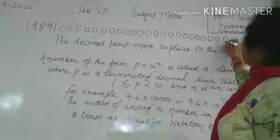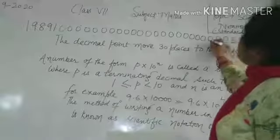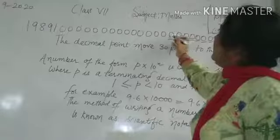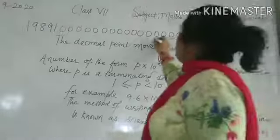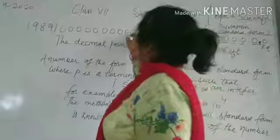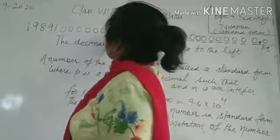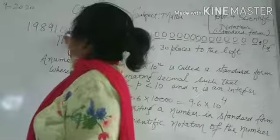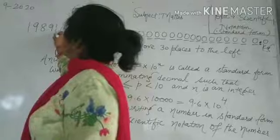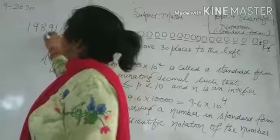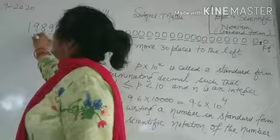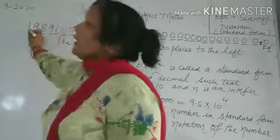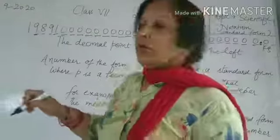Before writing into scientific notation, there should be only one digit before the decimal point. Counting the digits — 1 through 30 — we move the decimal 30 places to the left, keeping 1 before the decimal.